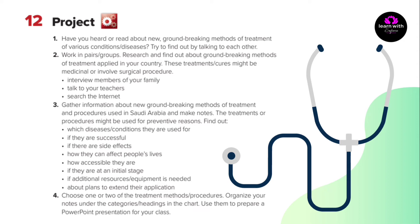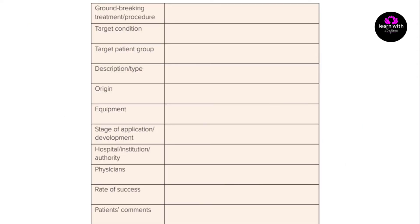اختر طريقة أو اثنتين من إجراءات العلاج، نظم ملاحظاتك ضمن الفئات أو العناوين الموجودة في الجدول، واستخدمها لإعداد عرض PowerPoint تقديمي لفصلك. الخانة الأولى: 'Groundbreaking treatment/procedure' — علاج أو إجراء رائد. الخانة التي تحتها: 'Target condition' — الشرط المستهدف أو الفئة المستهدفة. 'Target patient group' — مجموعة المرضى المستهدفة.